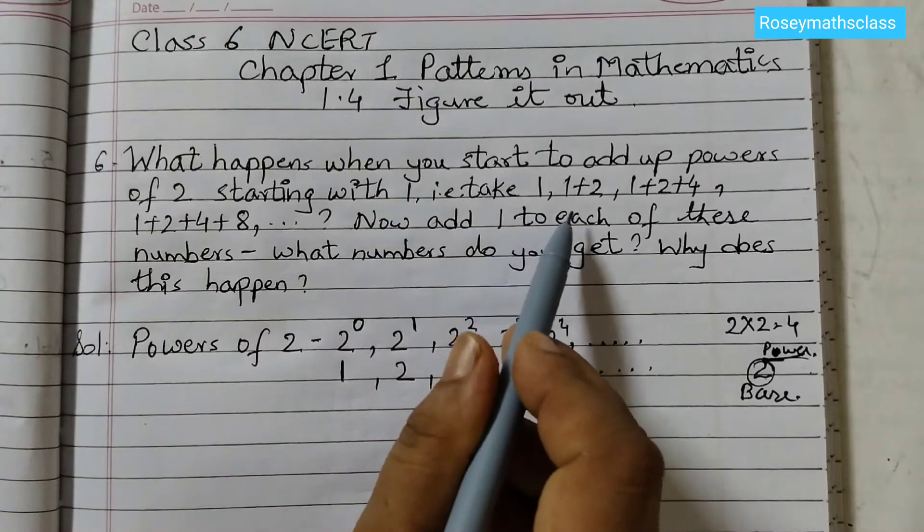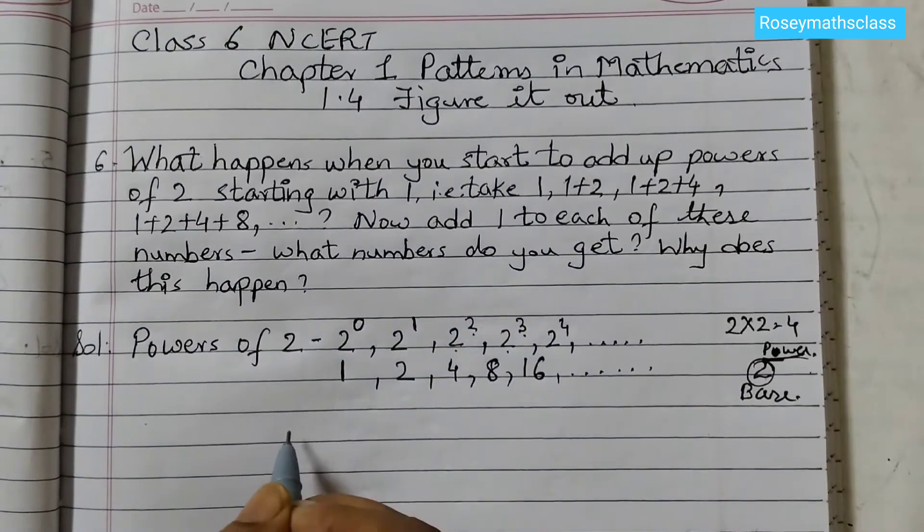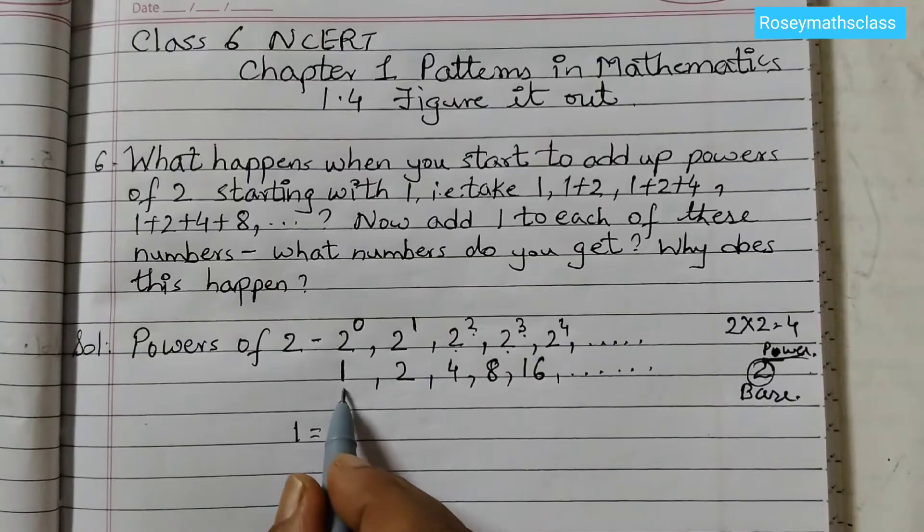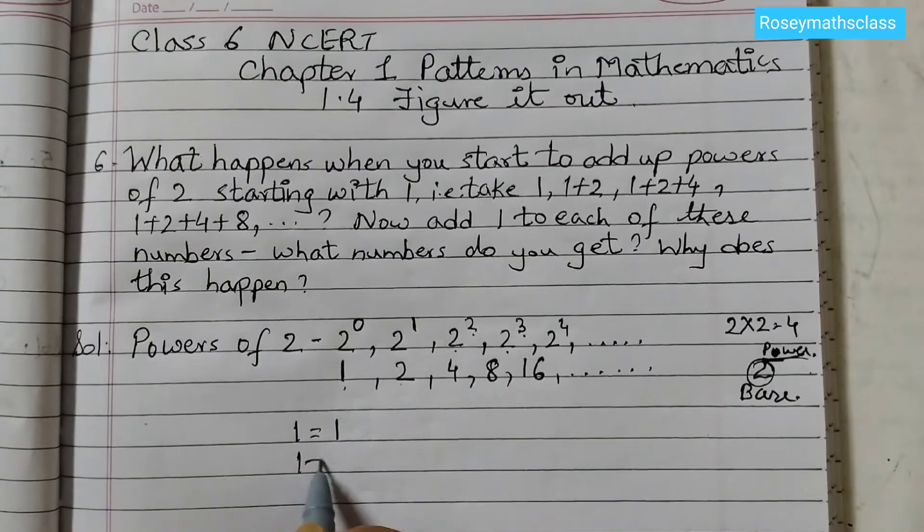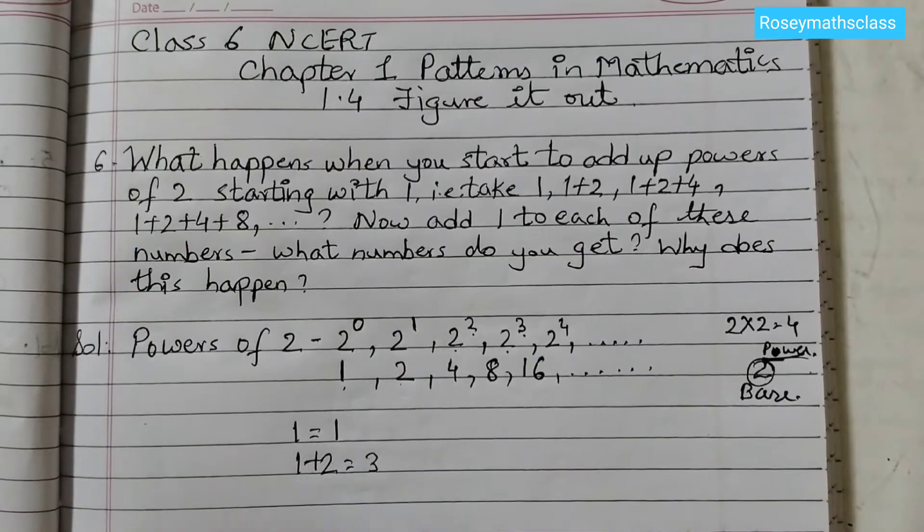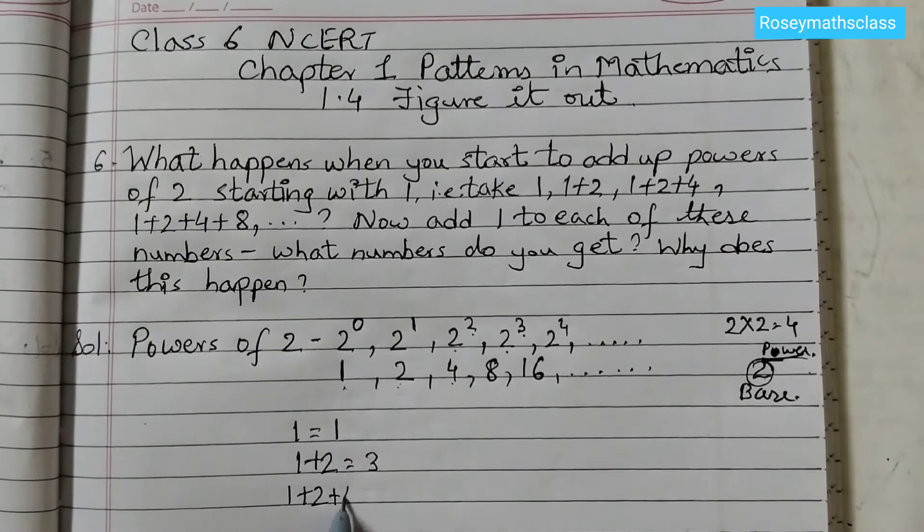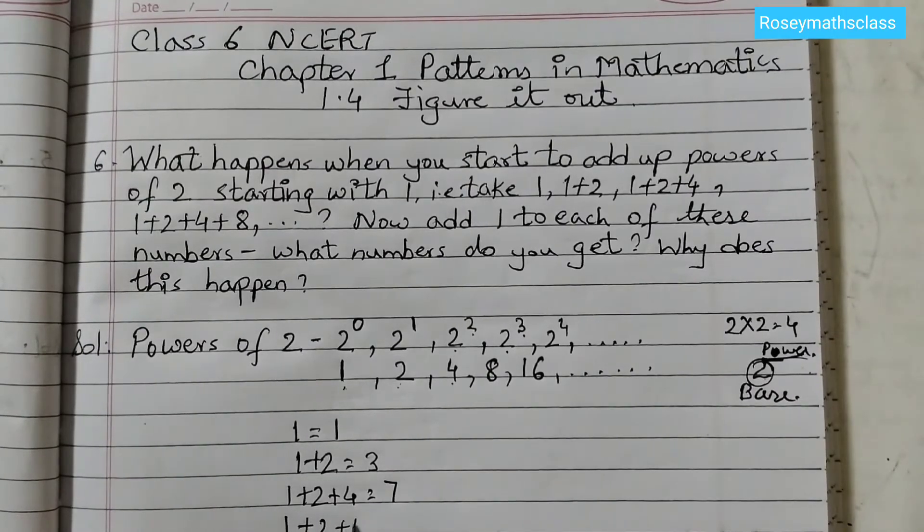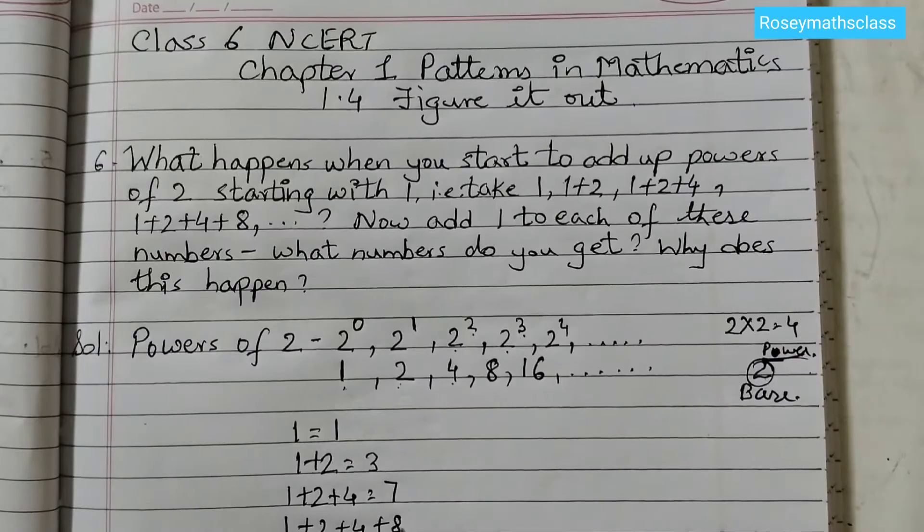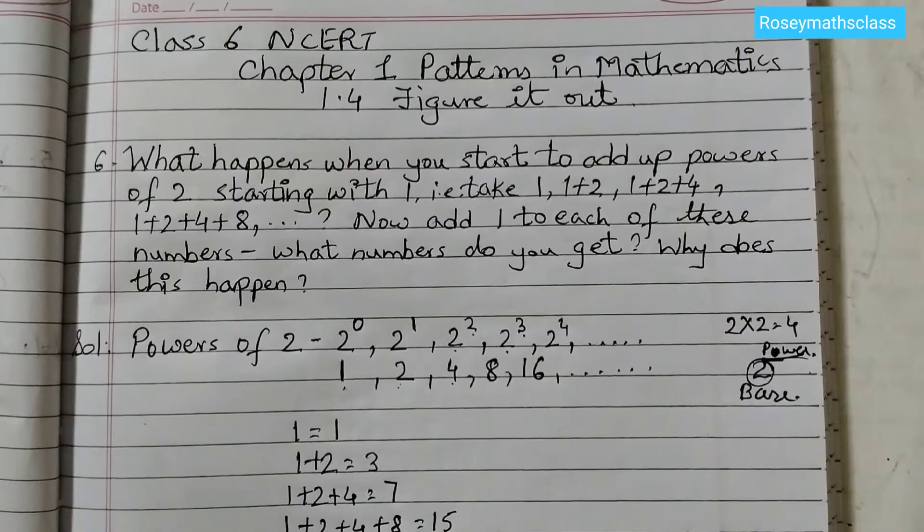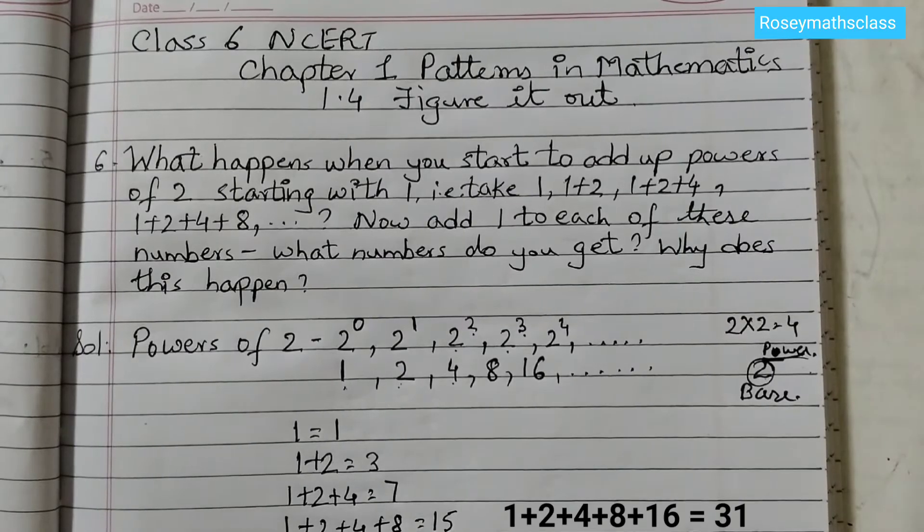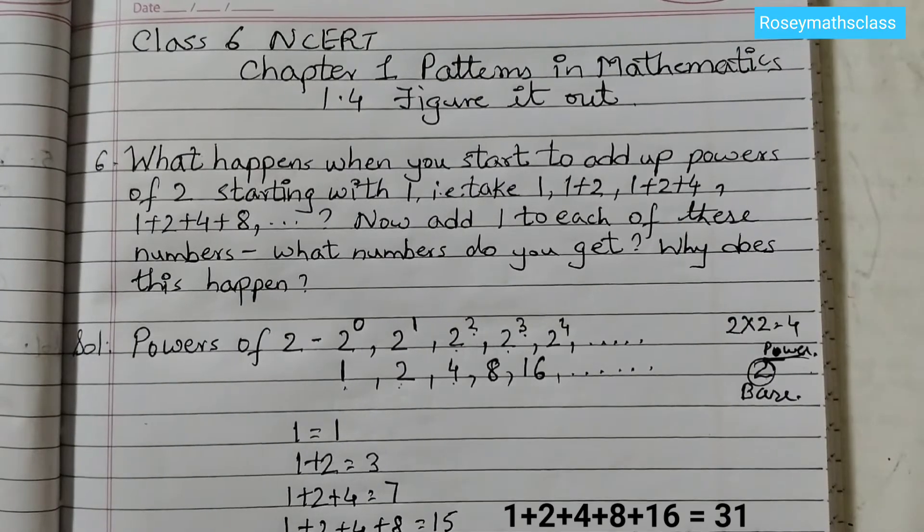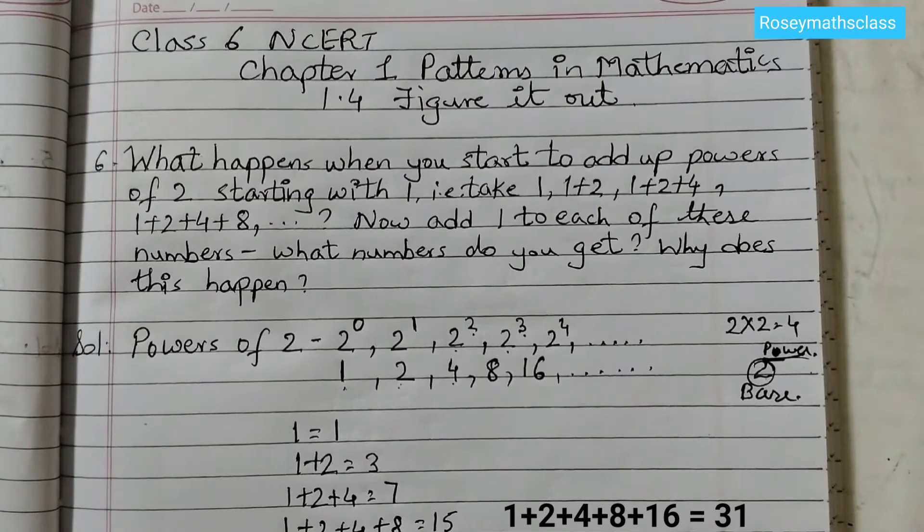Now we need to add these powers. So first we will take 1. 1 is equal to 1. 1 plus 2, 1 plus 2 is 3. 1 plus 2 plus 4, 1 plus 2 plus 4 is 7. Then 1 plus 2 plus 4 plus 8. So 7 plus 8 would be 15. 1 plus 2 plus 4 plus 8 plus 16. So 15 plus 16 is 31.